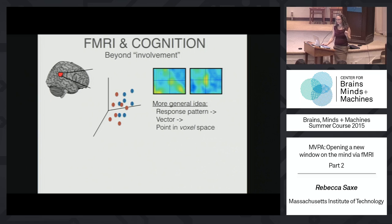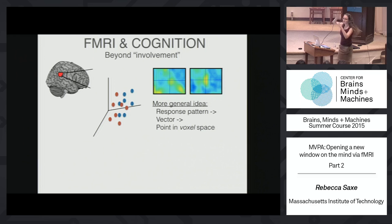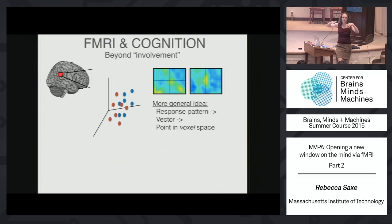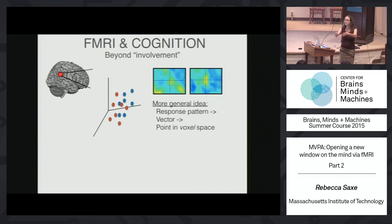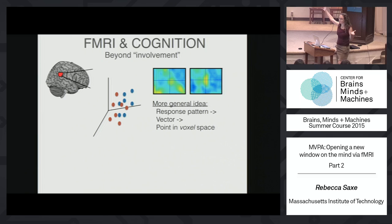This is the key insight behind MVPA: we had been thinking about everything in the space of cortex. But instead of thinking of a spatial pattern on cortex, treat each voxel as a dimension of a very multidimensional space. The response to every stimulus is one point in voxel space. Your mental representation of fMRI data used to be a BOLD response, then a spatial pattern over cortex, and now it's a point in voxel space.